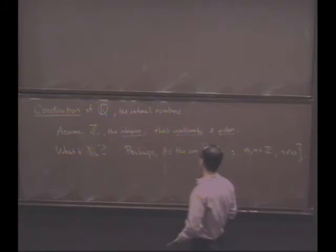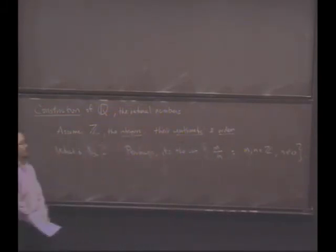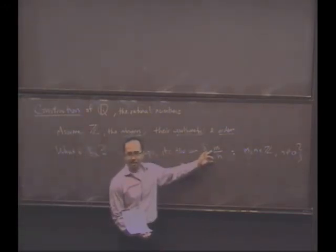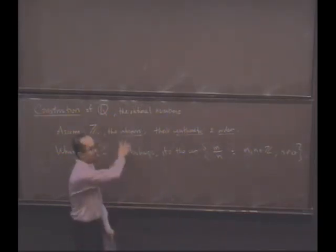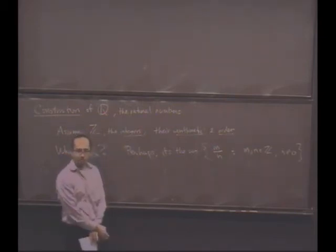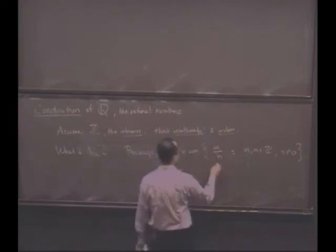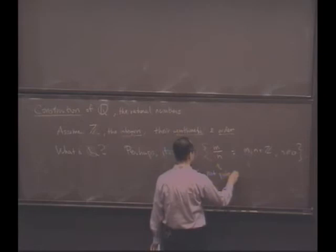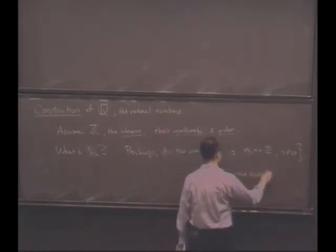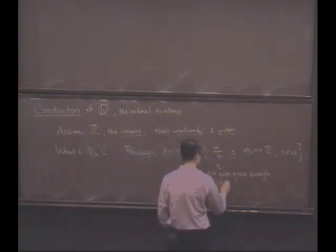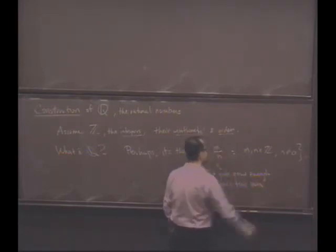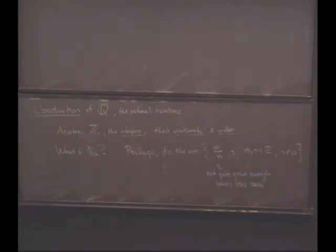This is one possible answer you might give to this question, but it's not very satisfactory for a few reasons. Probably the most important reason is we have no idea what this notation means. What do you mean by M over N? The integers don't have a division defined on them. What does it mean? So I'm just going to say this is not quite good enough because we don't know what we mean by this symbol.